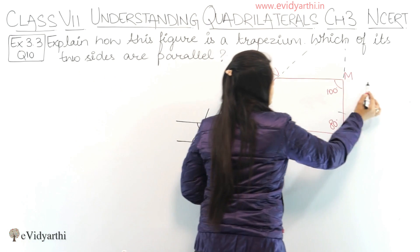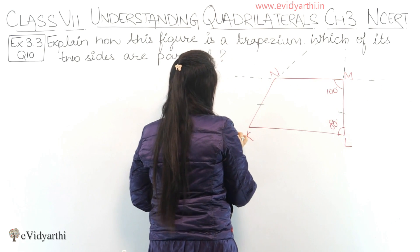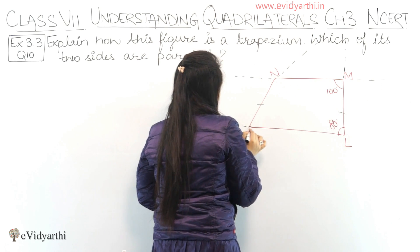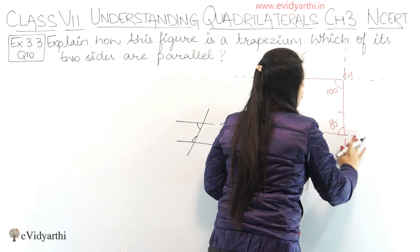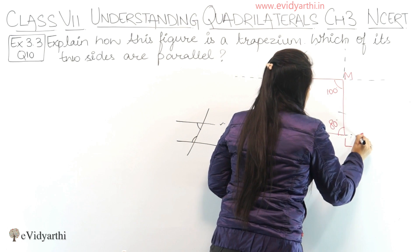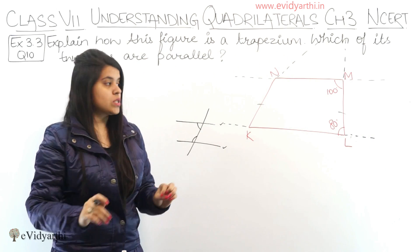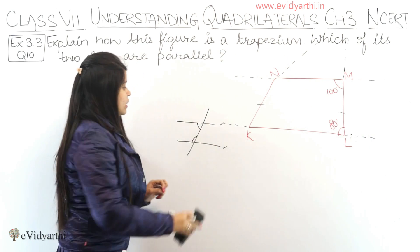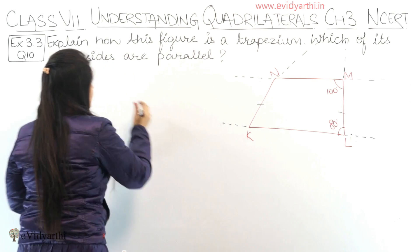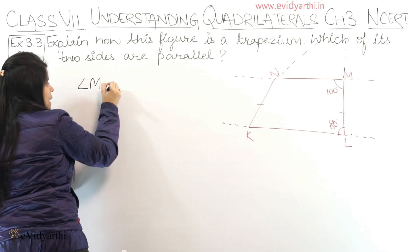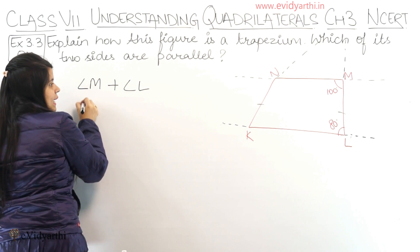If I extend this line like this, and from this side similarly extend this other line, so if these two lines are there, then ML is acting as a transversal. So if I add angle M and angle L — angle M plus angle L — what is angle M?